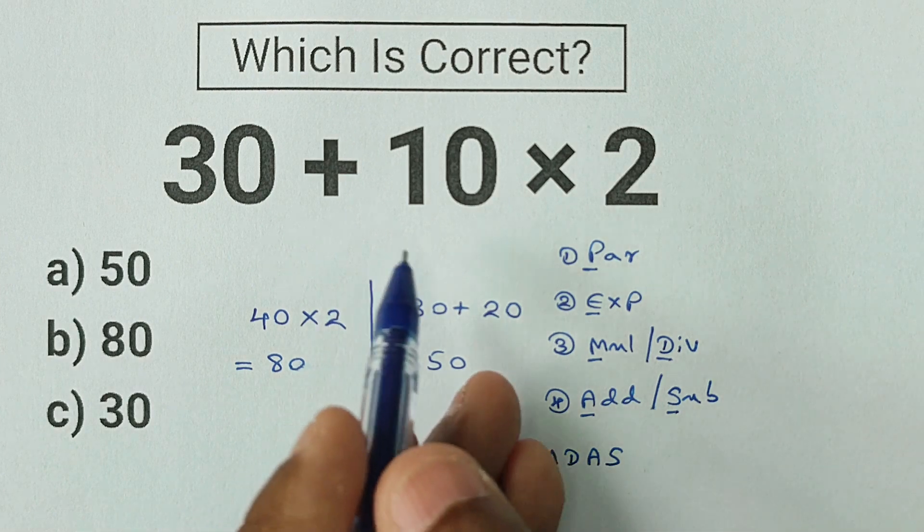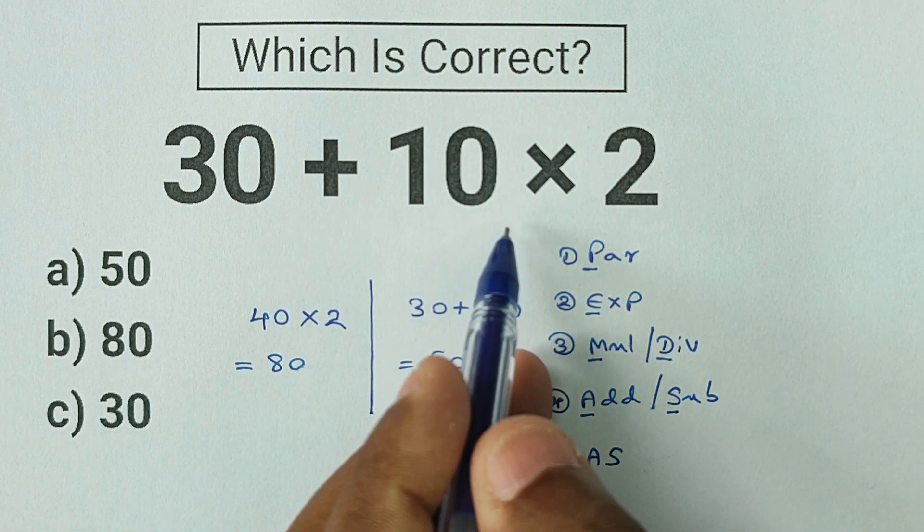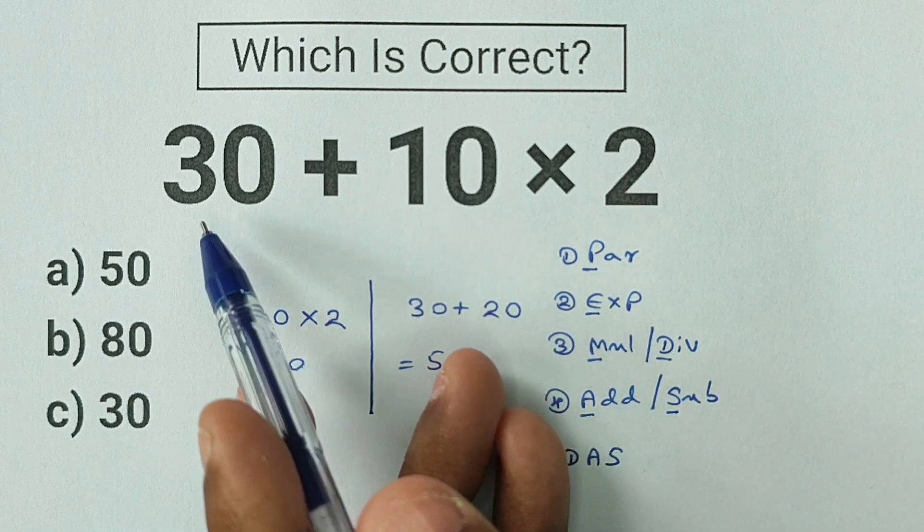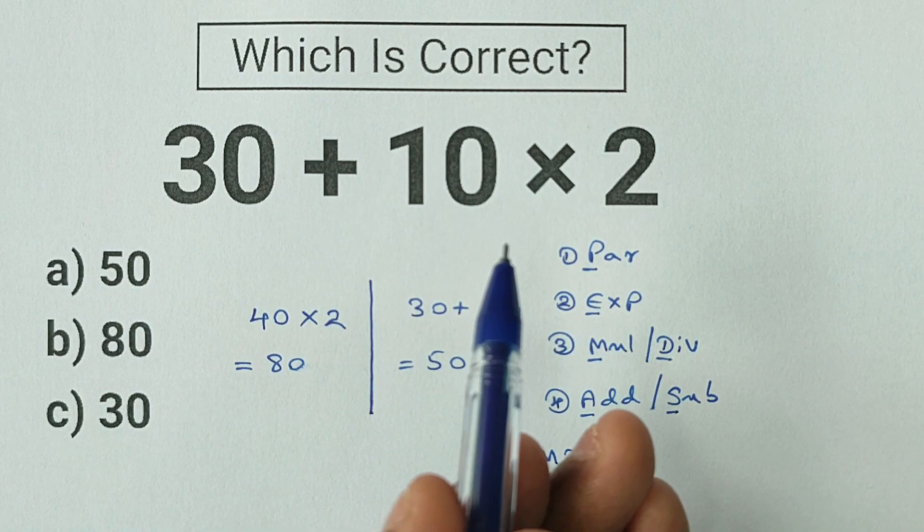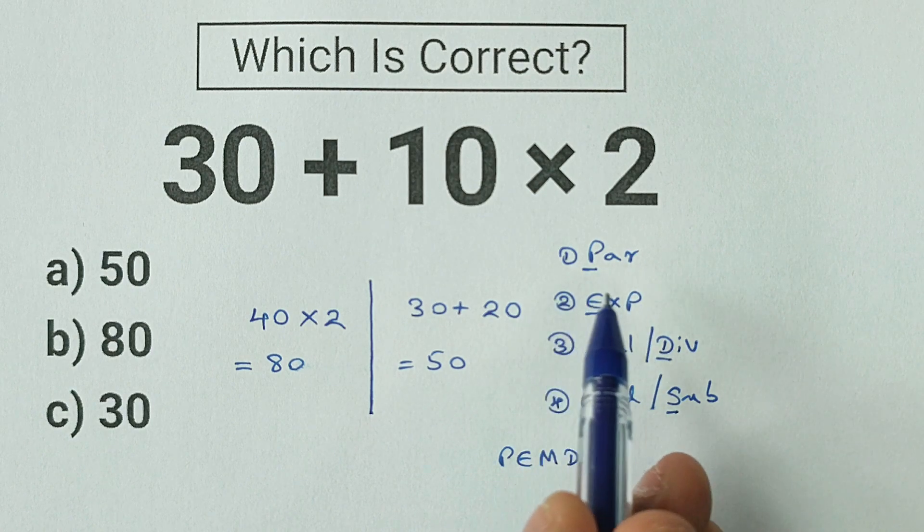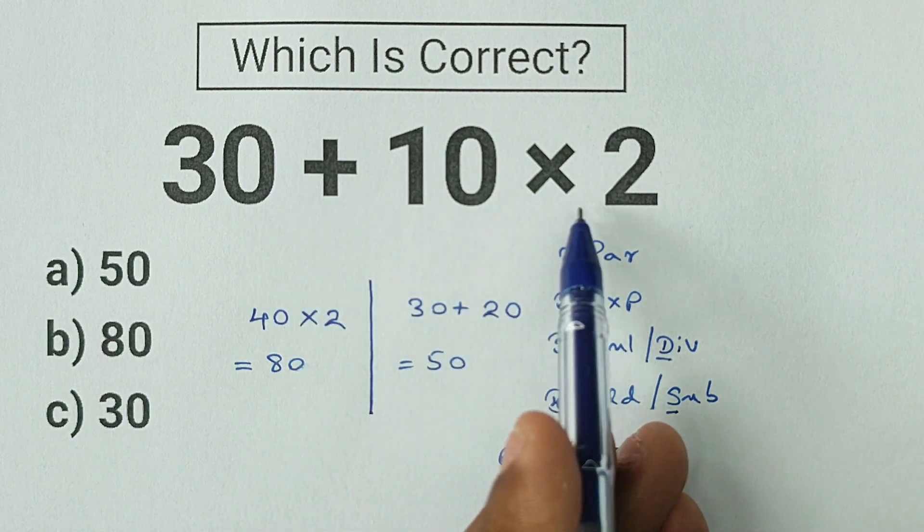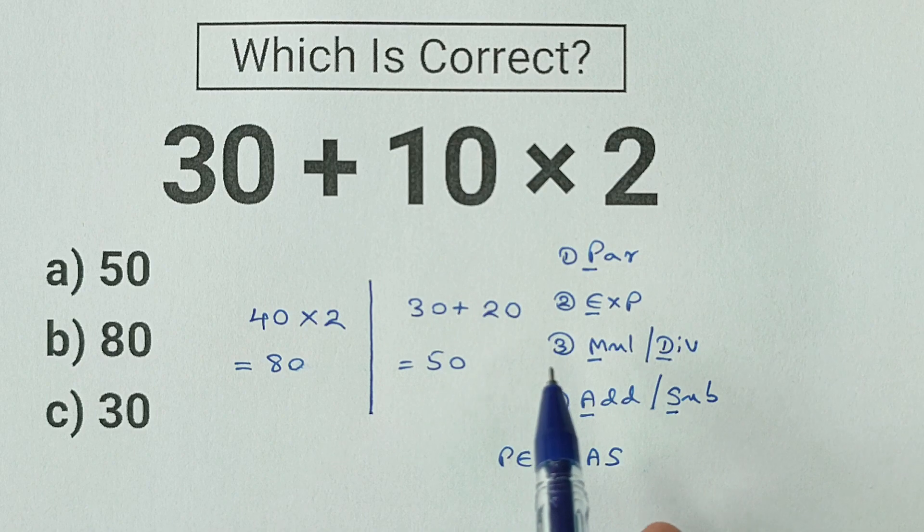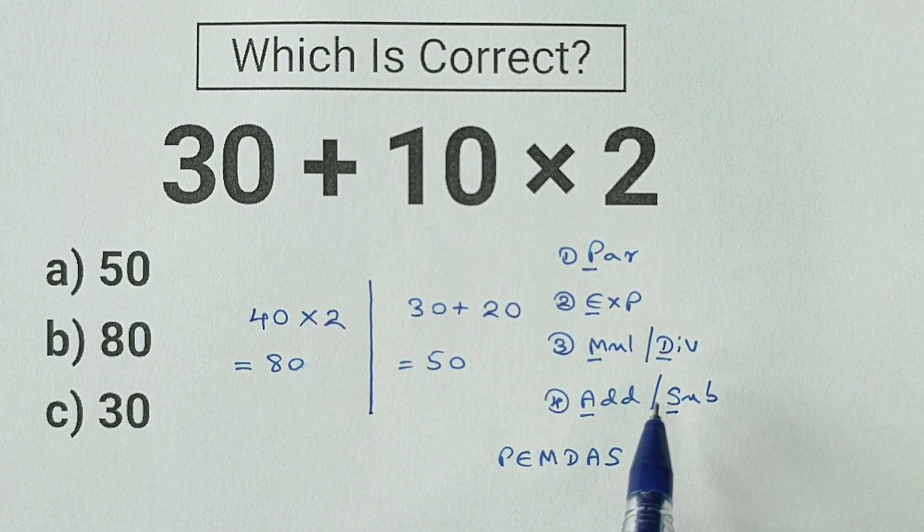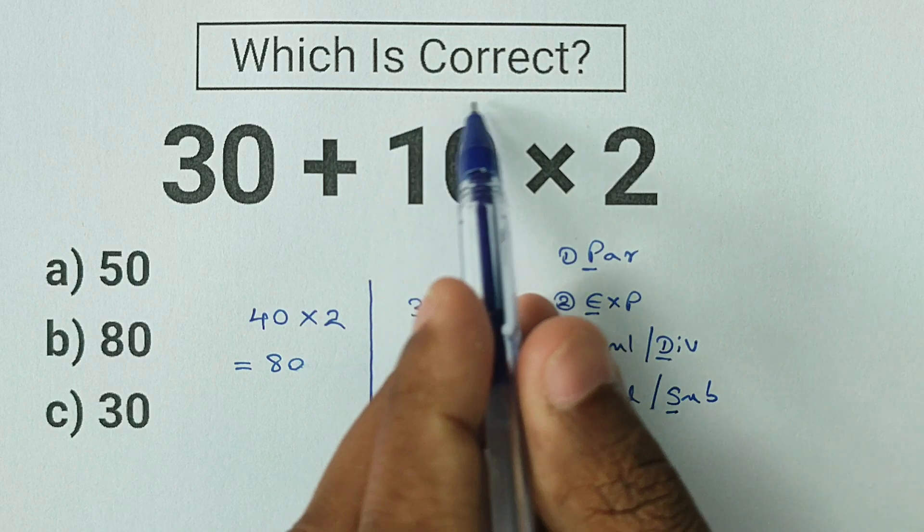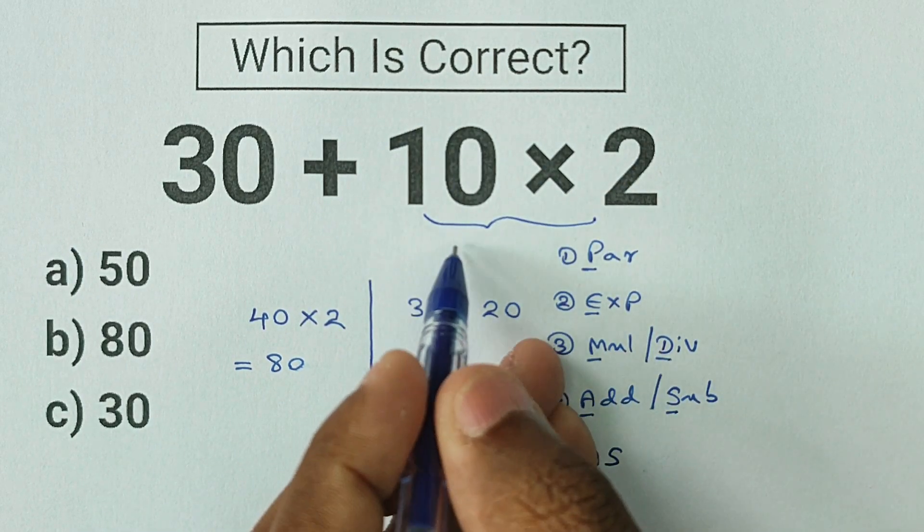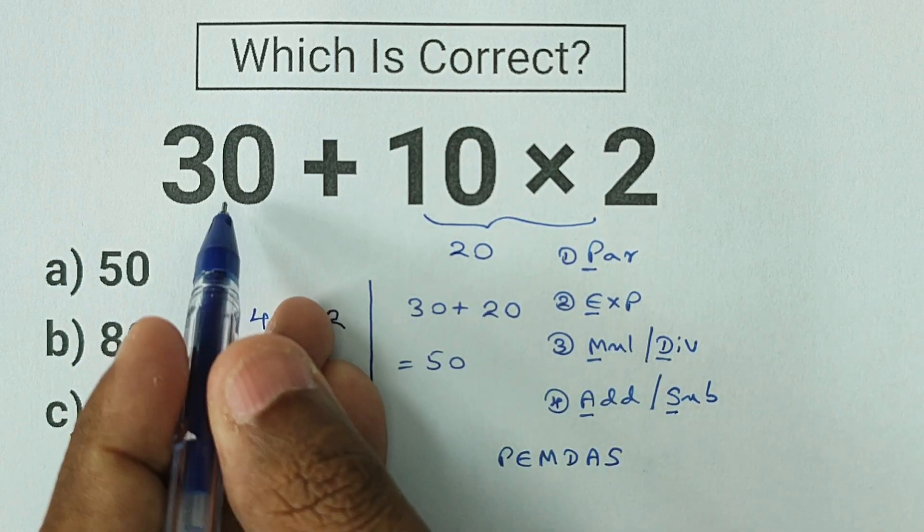Okay, so let's use this order of operations to solve this expression. Our first step is parentheses. There are no parentheses in this expression, so we can move on to the next order of operation. Our next order of operation is exponents. Since we don't have any exponents in our expression, we can move on to the next order of operation, which is multiplying and dividing. Notice we have 10 multiplied by 2. We know 10 multiplied by 2 is equal to 20, and the rest of our expression stays the same.